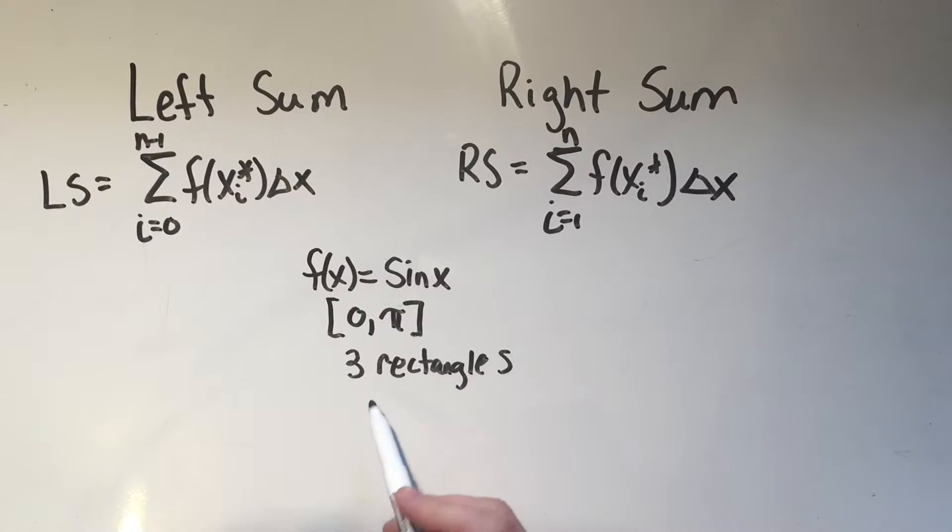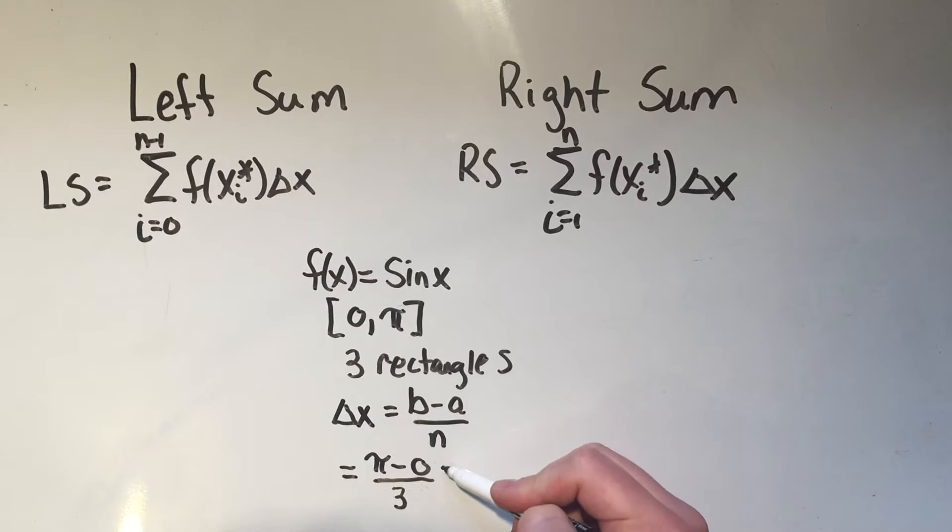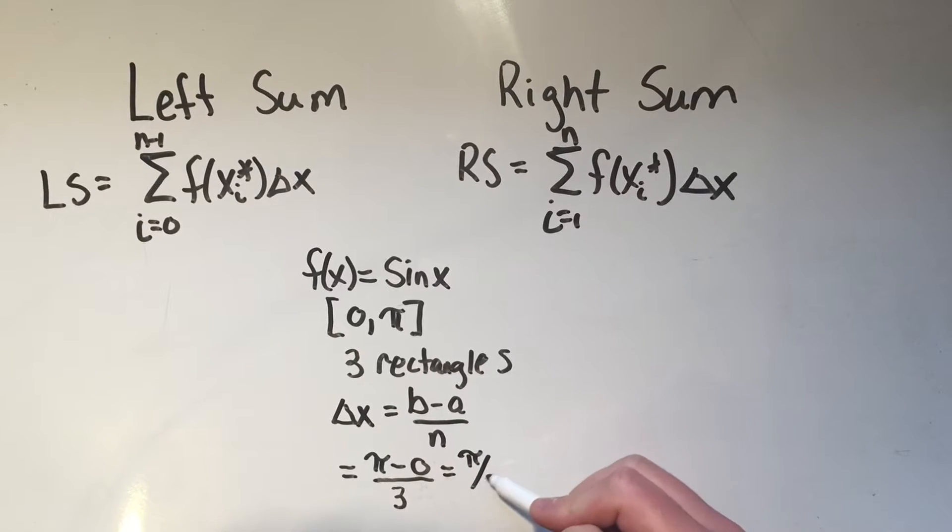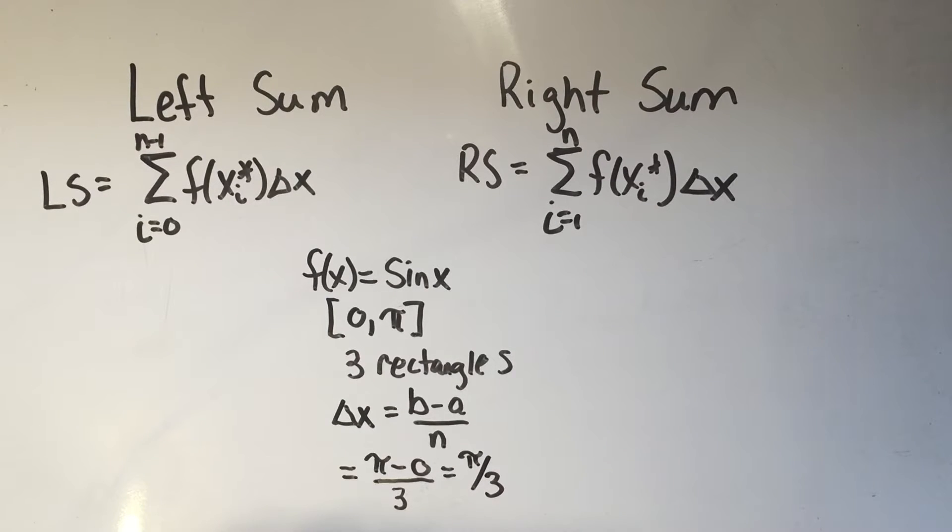I need delta x. And delta x, if you remember, is b minus a over n. In this case, b is my right endpoint, pi. A is my left endpoint, which is zero. And n is the number of rectangles, which is three. So my delta x is pi over three. And pi over three, in this case delta x, remember that's the width of all the rectangles.